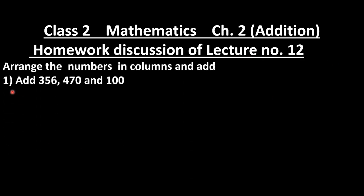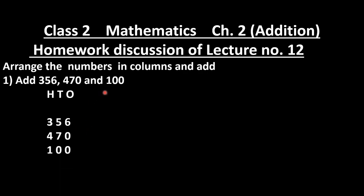Now homework discussion from lecture number 2. Question 1: add 356, 470 and 100. Write ones, tens, hundreds places. At ones: 6 plus 0 is 6. At tens: 5 plus 7 — count 7 after 5: 6, 7, 8, 9, 10, 11, 12 — write 2, carry 1. At hundreds: 3 plus 4 is 7, plus carry 1 is 8, plus 1 is 9. Our answer is 926.